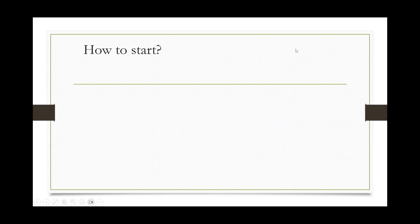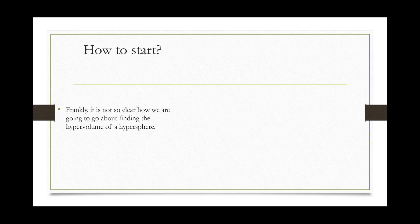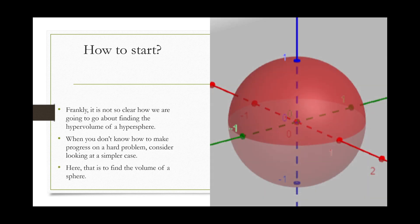Now that we have those definitions out of the way, let's get started on actually trying to solve this problem. Frankly, it's not so clear how we're going to go about finding the hypervolume of a hypersphere — besides, we can't even imagine what one looks like. It is in moments such as these, where we do not understand how to make progress on a hard problem, that we should consider looking at a simpler case. Here, that case is trying to find the volume of a simple sphere. Now you might say we already know the volume of a sphere is 4/3 π r³, but the point of looking at the simpler case is to see how we found that formula and whether we can use a similar idea to find the hypervolume of a hypersphere.